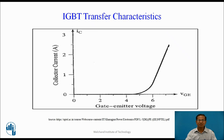IGBT transfer characteristics show the relation between gate voltage and collector current. As long as gate voltage is less than threshold voltage, collector current is nearly zero. Once VGE crosses the threshold voltage, the collector current increases and the device enters the conduction state.